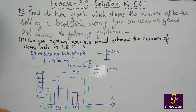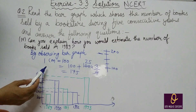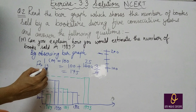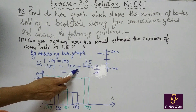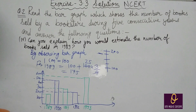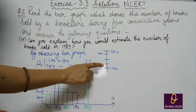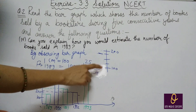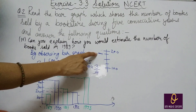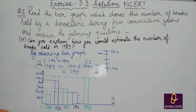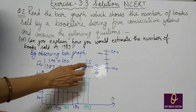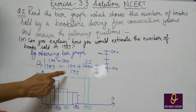आपको देखना है कि 1989 में number of books कितनी हैं. कैसे किया: 1 cm equal to 100. 1989 के लिए 100 + (3/4 × 100) = 100 + 75 = 175. यह 3/4 इसलिए किया क्योंकि graph half से थोड़ा ज़्यादा था. अगर first वाला होता तो 125 (1/4), यहाँ होता तो 2/4, और यहाँ है तो 3/4. 100 + 75 = 175.